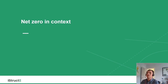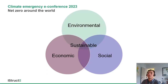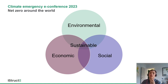Let's get stuck in. First of all, I want to talk about net zero in context. We're going to start by trying to put net zero in the wider context of the sustainability picture. I think we can reframe this in terms of the three pillars model of sustainability. For something to be truly sustainable, we want it to consider not just the environmental impacts, but also the economic and social benefits of construction.